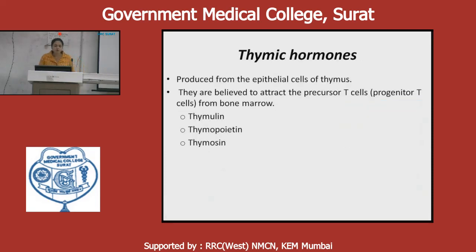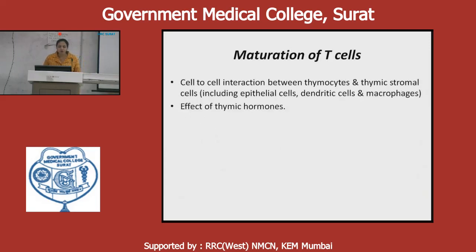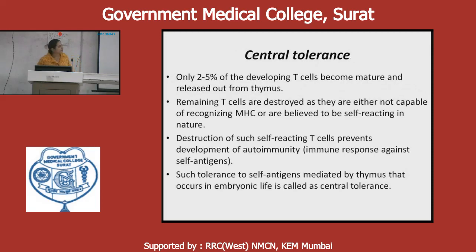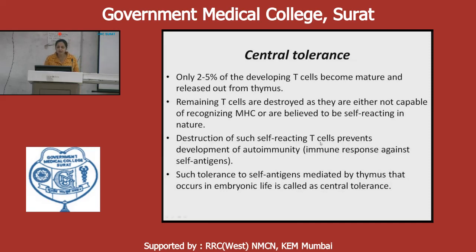Thymic hormones secreted by the epithelial cells of the thymus are believed to attract precursor T cells from bone marrow. These hormones are thymulin, thymopoietin, and thymosin. Maturation of T cells involves cell-to-cell interaction between thymocytes and thymic stromal cells and is driven by thymic hormones. After maturation, the T cell moves to the lymph nodes. Central tolerance is a mechanism for prevention of autoimmunity — only 2–5% of developing T cells become mature and are released from the thymus. The remaining T cells that are not capable of MHC recognition or are self-reactive are destroyed, preventing autoimmunity. This is called central tolerance.